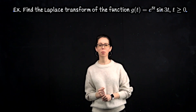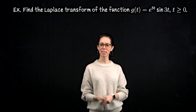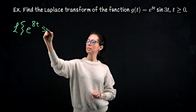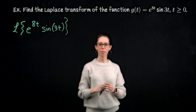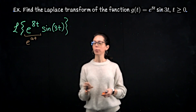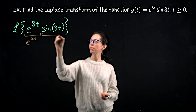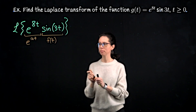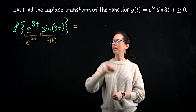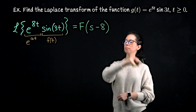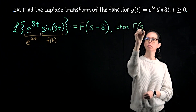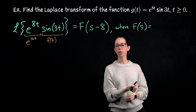Let's use what we just found to compute the Laplace transform of e to the 8t times sine of 3t. We map this to our framework: e to the 8t is our e to the at, which means the shift by a is a shift by 8. And sine of 3t is what we were calling the function little f of t. So we know immediately this is capital F of s minus 8, where F of s is the Laplace transform of sine of 3t.